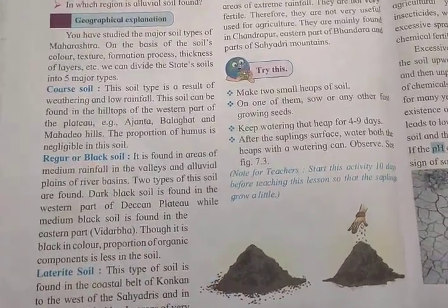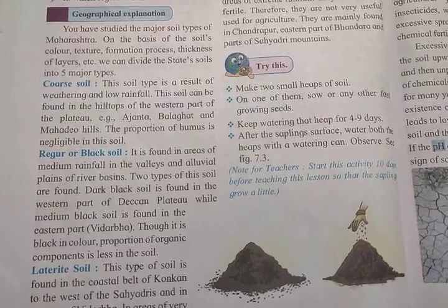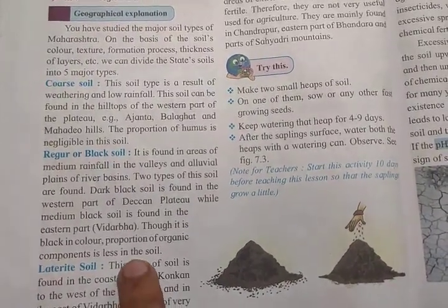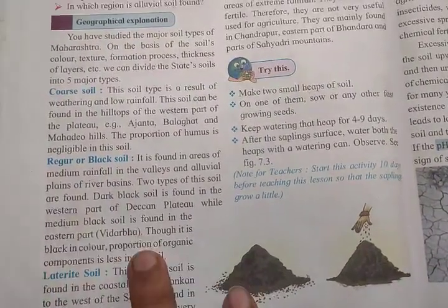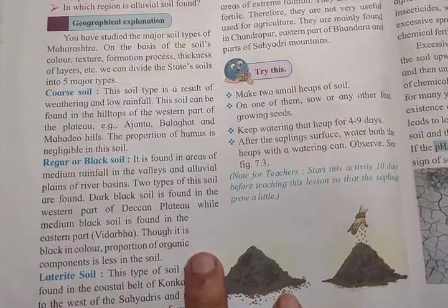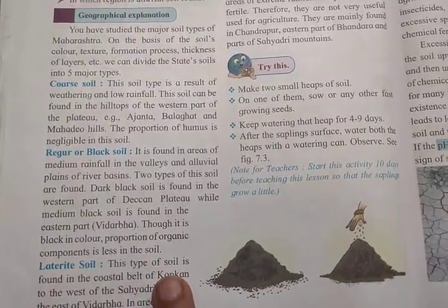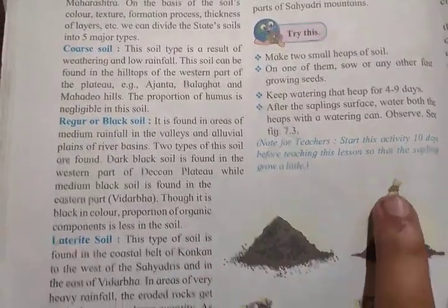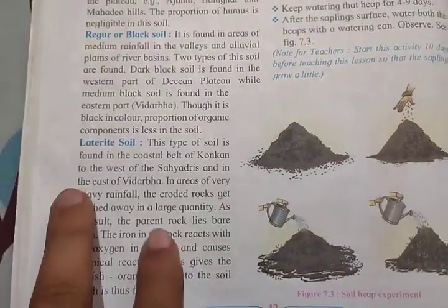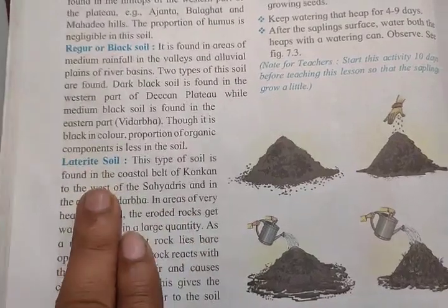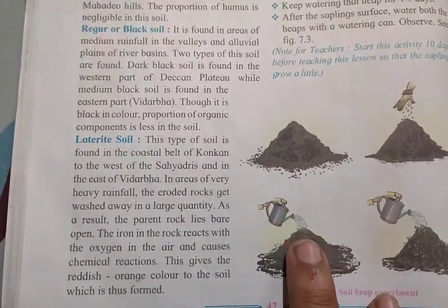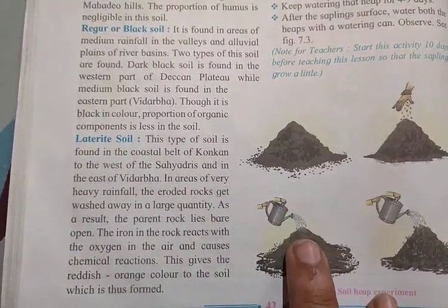Dark black soil is found in the western part of the Deccan Plateau and the proportion of organic component is less in this soil. A lighter variety of black soil is found in the eastern part. This type of soil is also found in the coastal belt of Konkan, to the west of the Sahyadri.